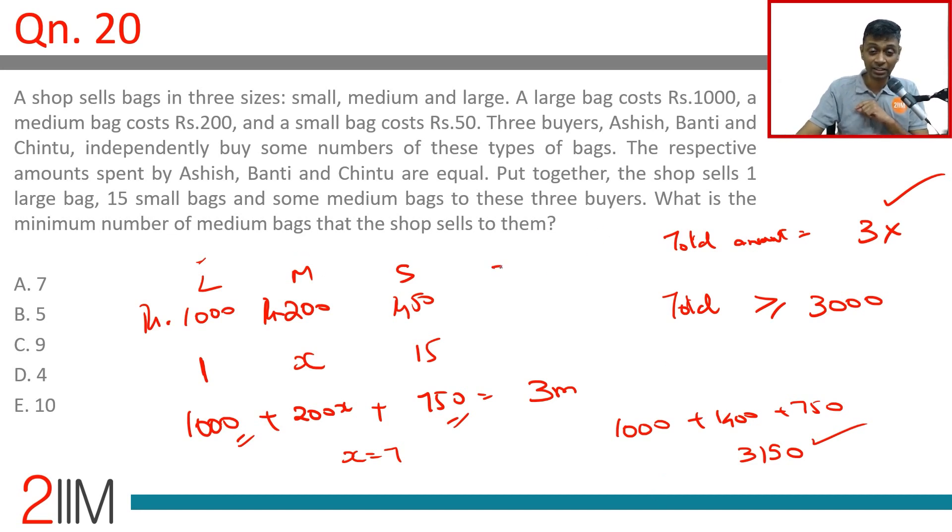Each of them should get 3150 divided by 3, equal to 1050. One guy can get one large and one small. Another guy can get 5 medium and one small. The third guy can get 2 medium and the remaining 13 small. 1050 times 3 being equal to 3150, with one large, 7 mediums, and 15 smalls. That is very much possible. 7 works.